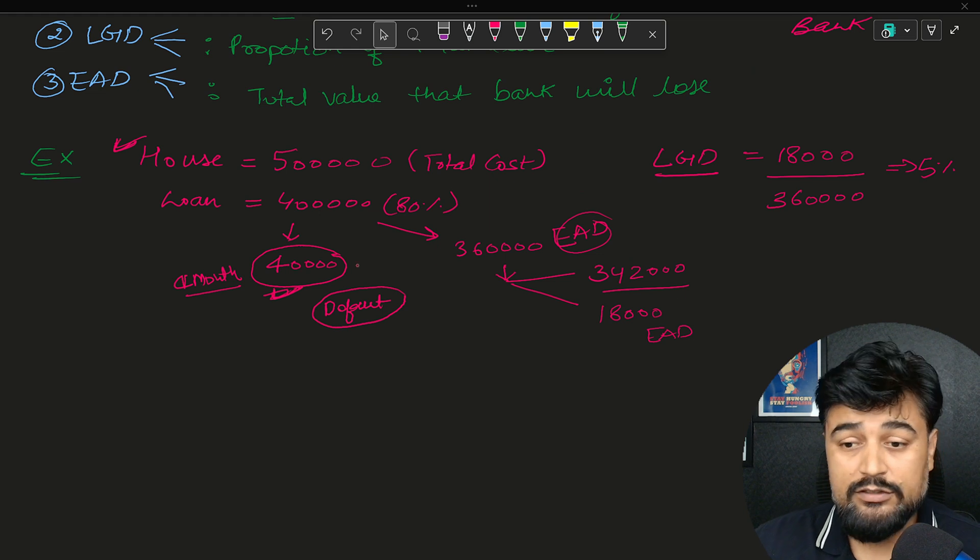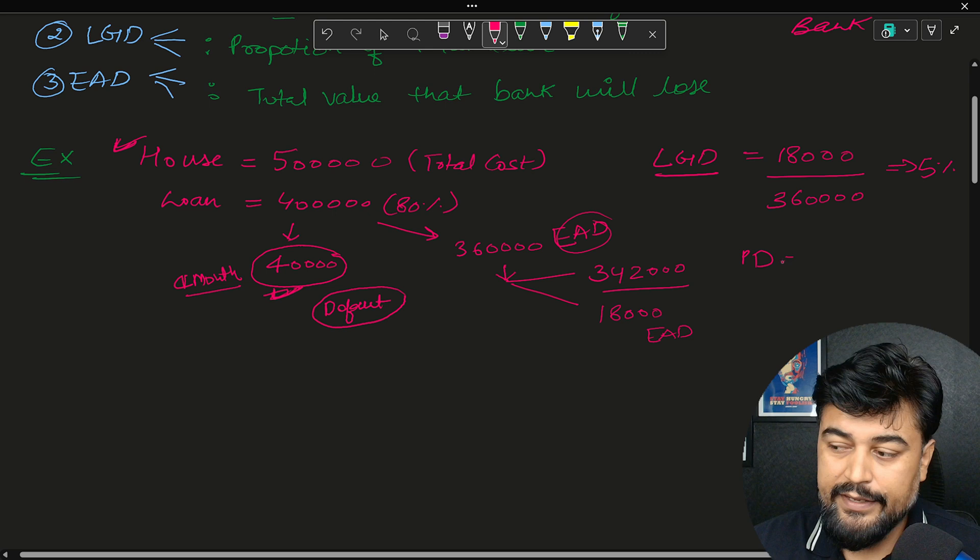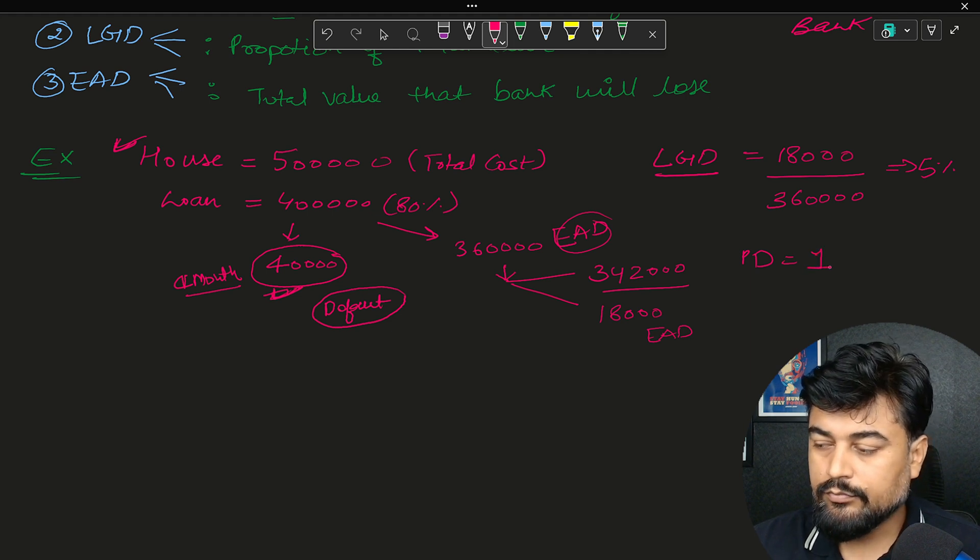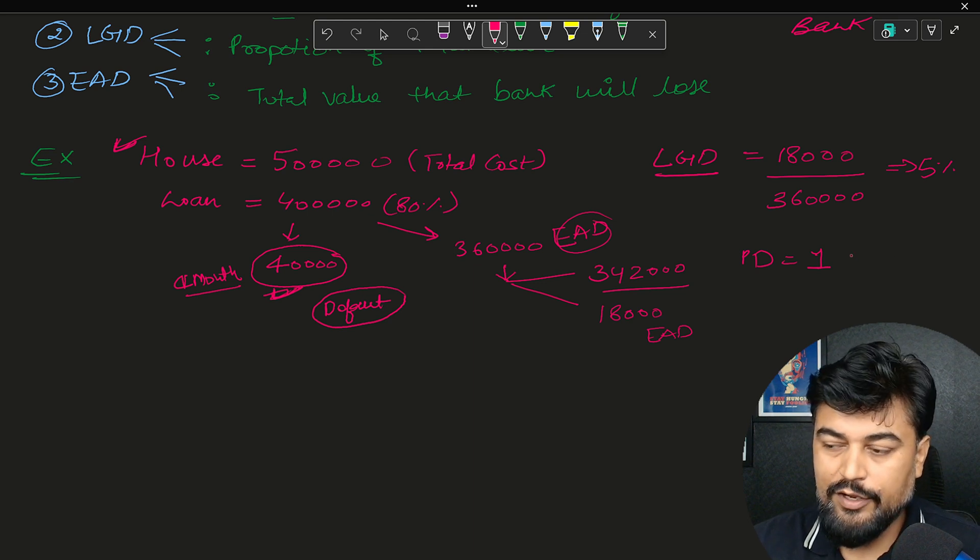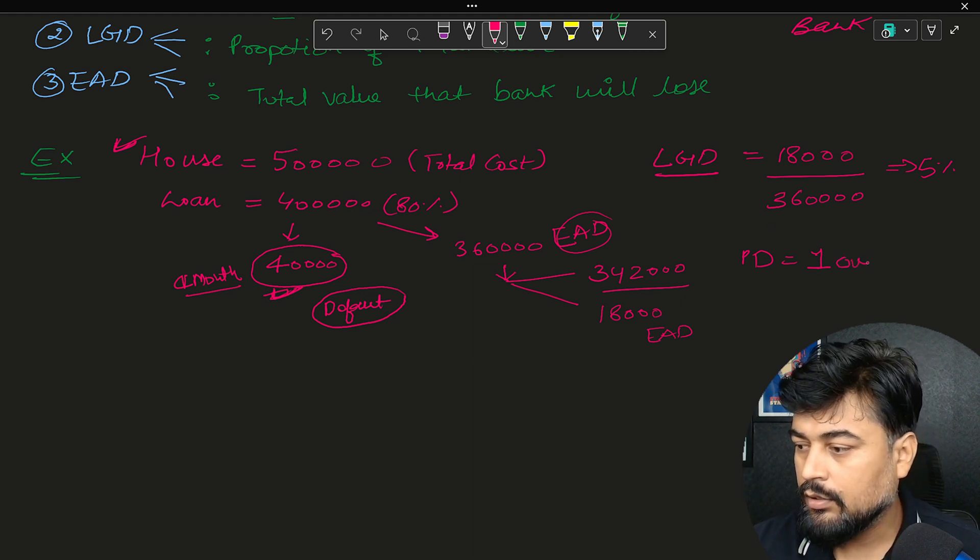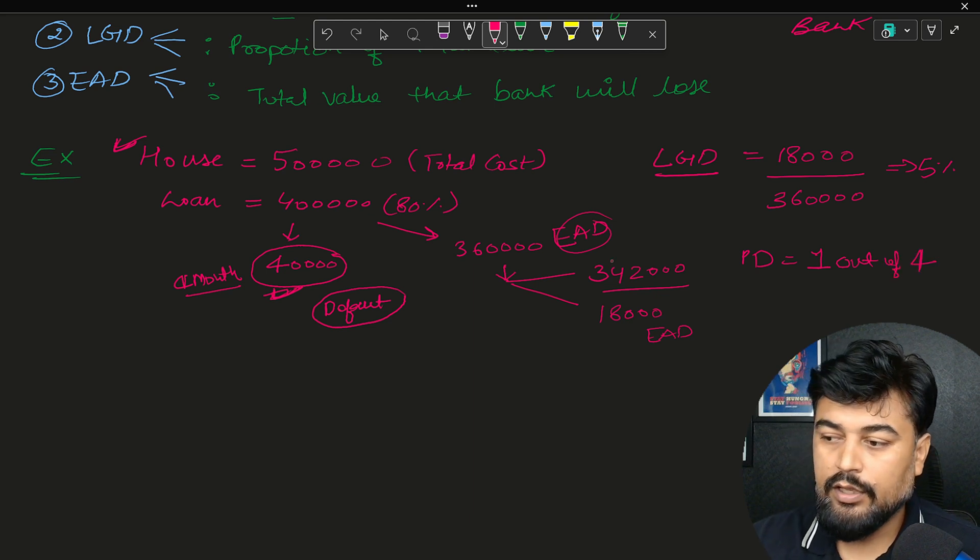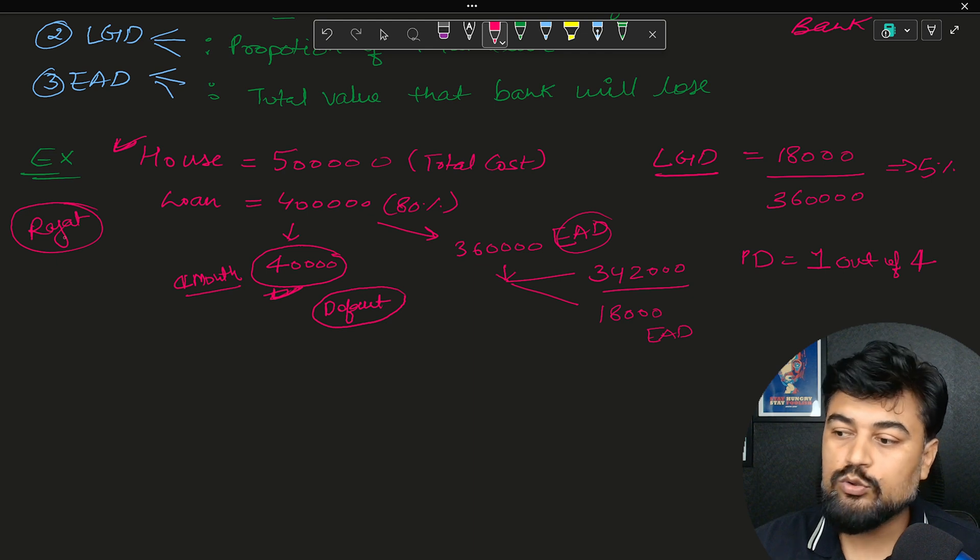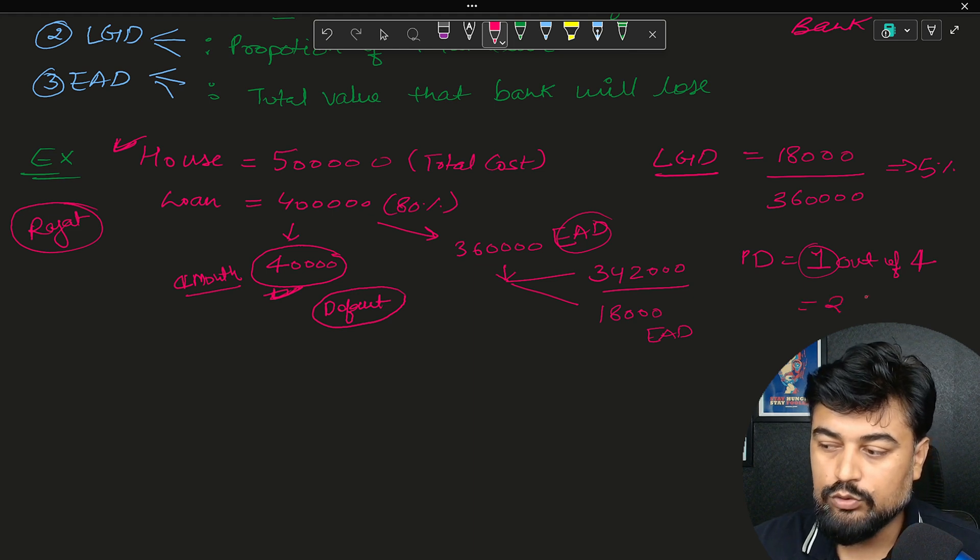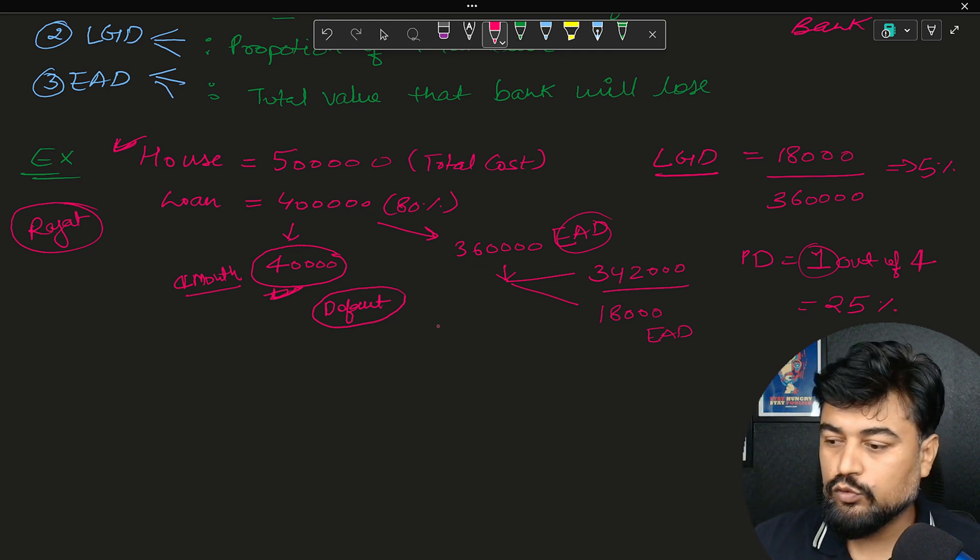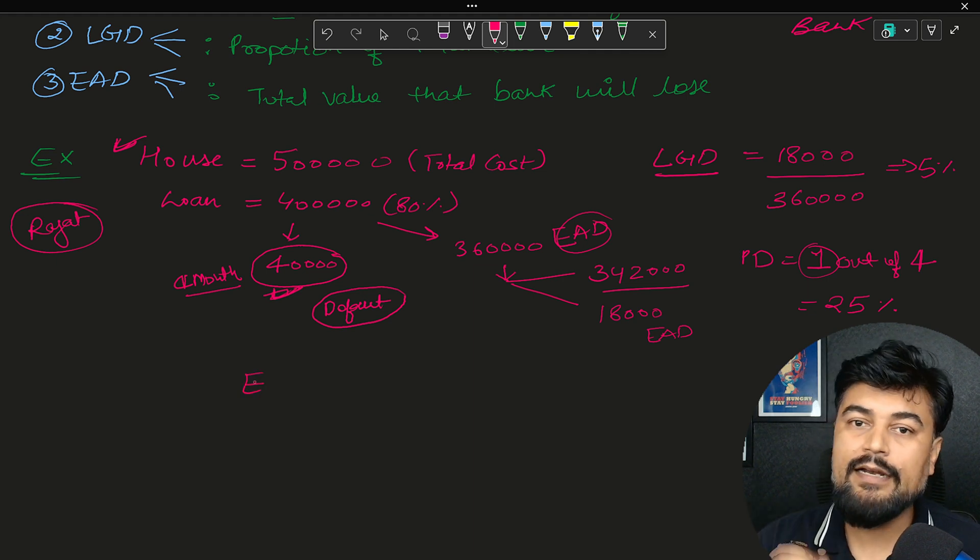Now the third component which I said is PD. So PD is usually in percentage again. So PD is always calculated on the basis of past experience. So let's say out of every four, every one person of similar habits is defaulting the loan. Let's say one out of four. Like this person, the name was Rajat. So whatever the characteristics Rajat is having in the data, so similar characteristics, one member out of four is defaulting. So the PD will be somewhere close to 25% out of 100. Now this is a very basic example. Don't get confused in this one.